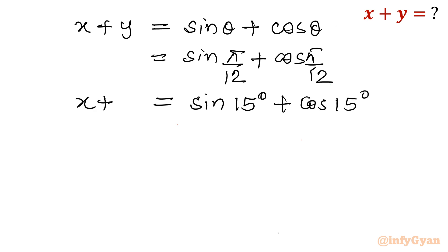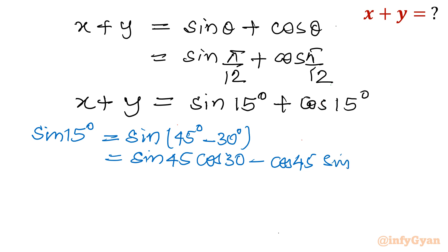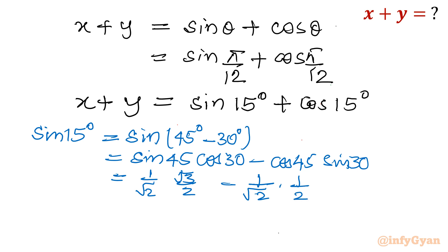Let us calculate sin 15 and cos 15. For sin 15, I write sin(45 minus 30) degrees, since 45 minus 30 is 15. Using the sin(A minus B) formula: sin A cos B minus cos A sin B. So sin 45 times cos 30 minus cos 45 times sin 30 equals (root 2 over 2)(root 3 over 2) minus (root 2 over 2)(1 over 2), which gives root 3 over 2-root-2 minus 1 over 2-root-2. Therefore sin 15 equals (root 3 minus 1) over 2-root-2.